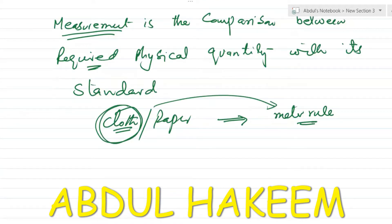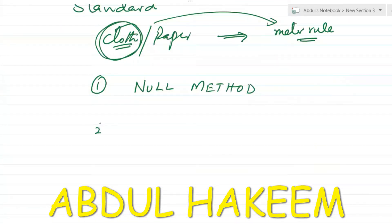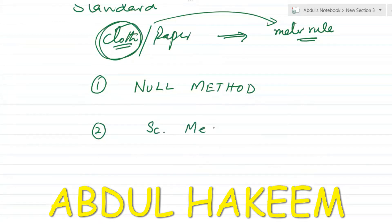If no data is collected and it is not recorded, then this type of measurement is called the Null Method — just the comparison. But if data is collected and its uncertainty, meaning the error, is also written along with the measurement, then this is called Scientific Measurement or the Scientific Method.